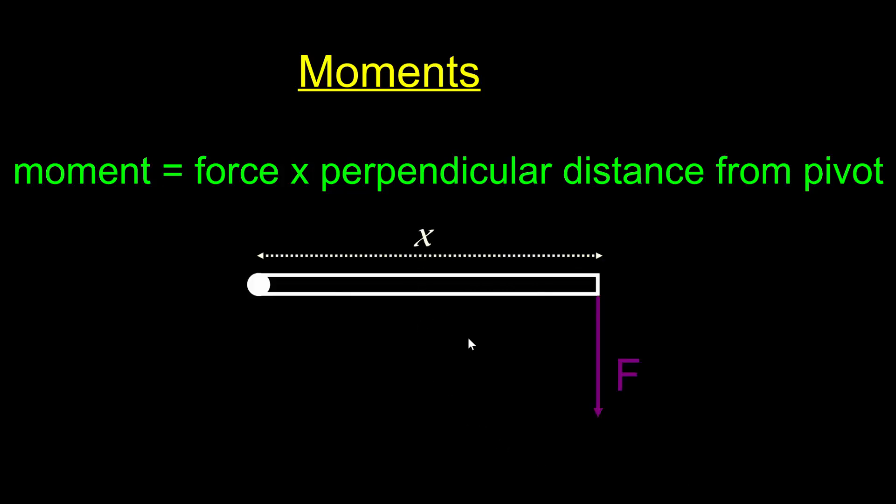Let me show you an example. Here we have a beam with some sort of hinge at one end and a force applied at the other. You'll see that the force is acting perpendicular to the beam itself, so there is a right angle here. And that means that we can simply work out the moments caused by this force by multiplying F by X.